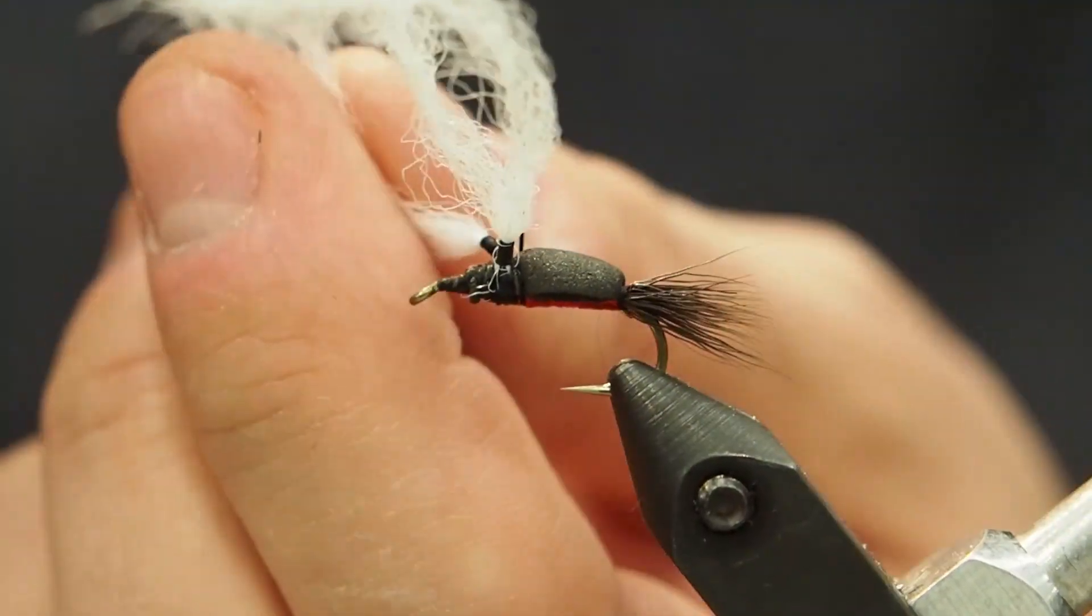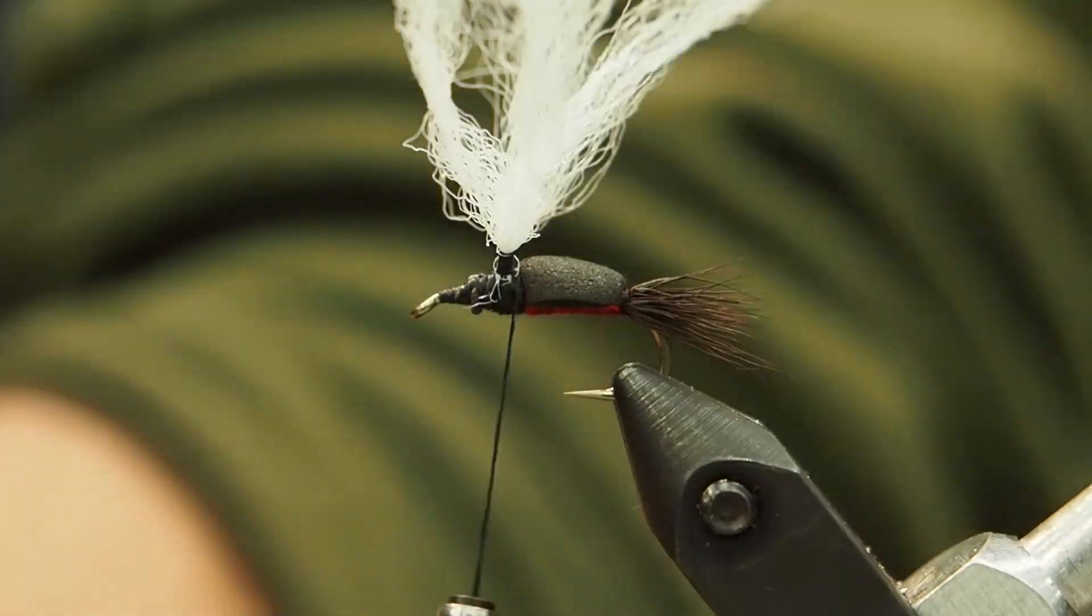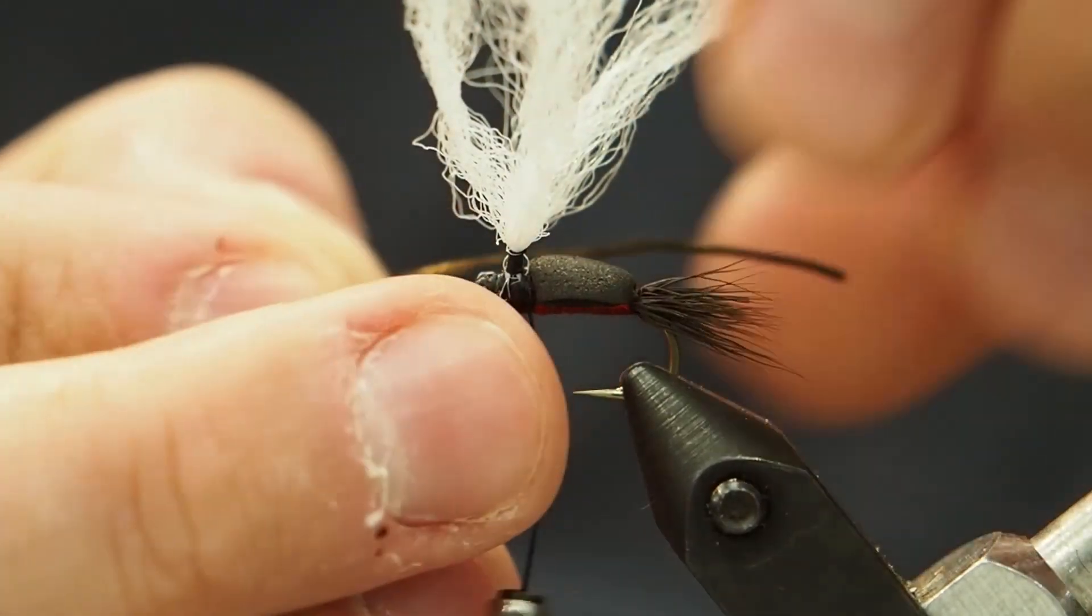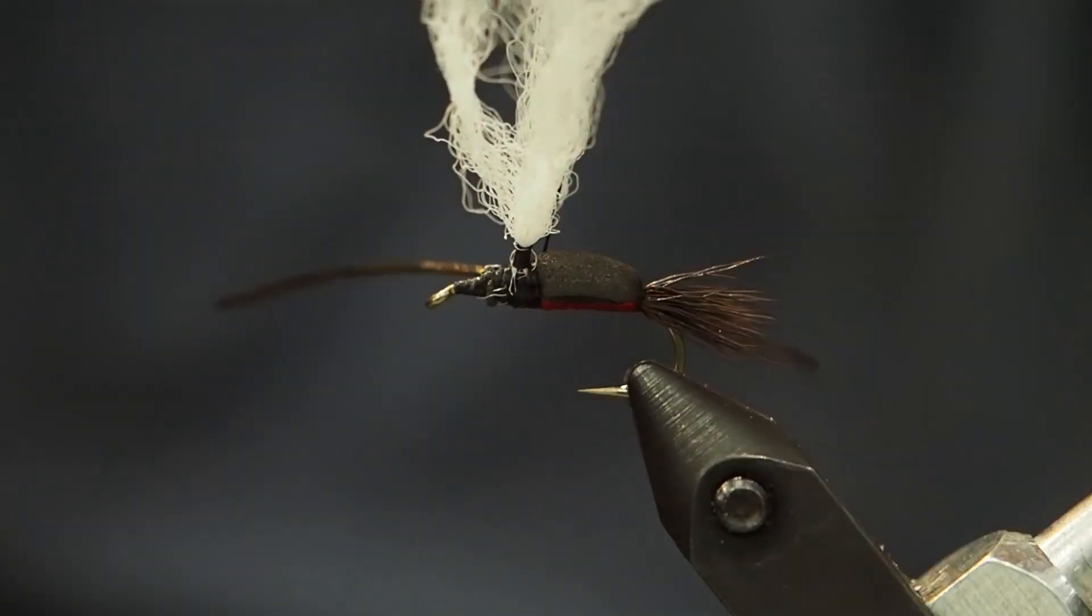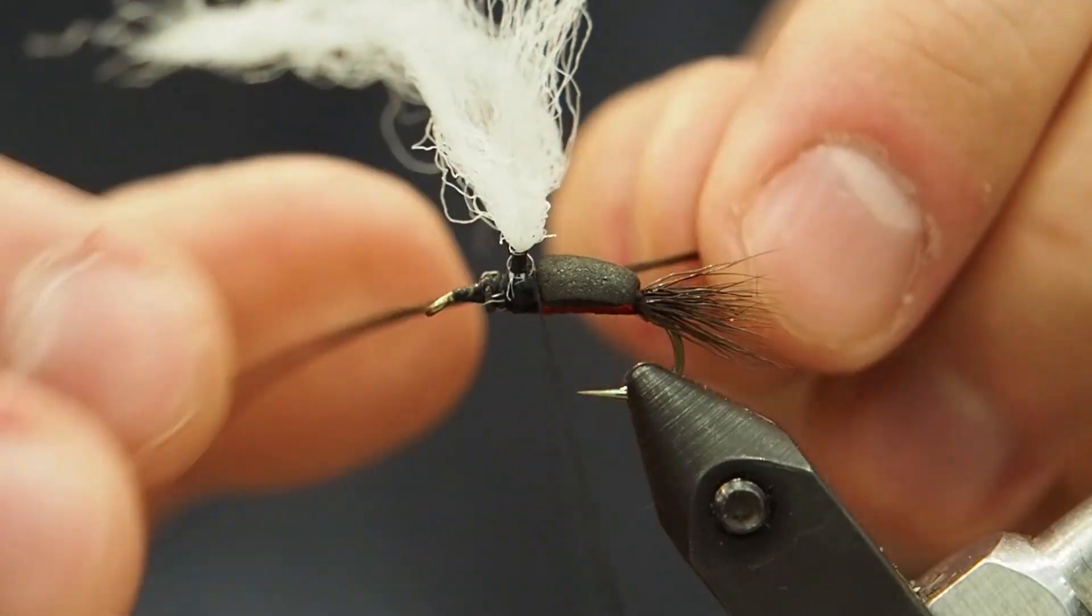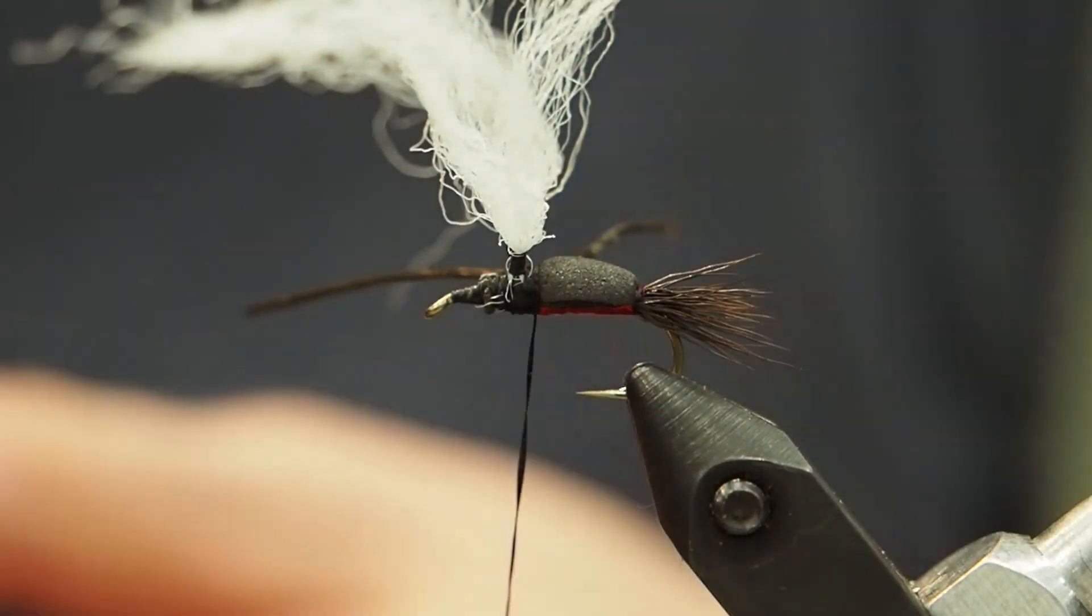Time to tie in our legs. I'm just using classic rubber legs here. I like the way they curve, just in a dark color. This is a dark olive color, and again I'm tying this all in between the foam but behind the pair of post wings. Just a classic simple two strand rubber leg pattern there. I'm going to make sure they're nice and even, and now we're good for that.